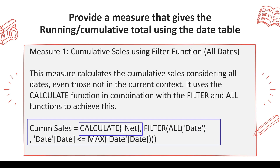In the CALCULATE measure, we filter by using ALL on the date — meaning removing all filters on the date, whether quarter, month, or year — and then say date is less than or equal to the MAX of date. MAX of date means the current date in context. For every date, it is going to consider all dates before it. Because ALL has been used, it will ignore any filter on the page. So even if you select one month, for that particular month it will consider data coming from the past — which is really important for on-hand inventory and financial balances.